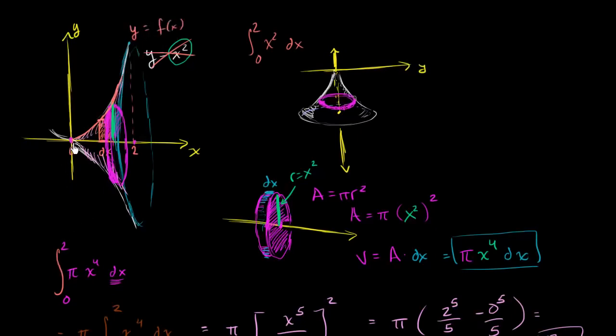And instead of saying that we're going between 0 and 2, let's just say we're going between a and b. So these are just two endpoints along the x-axis. How would we find the volume of this?